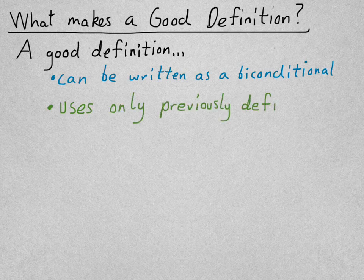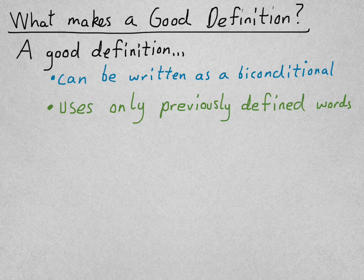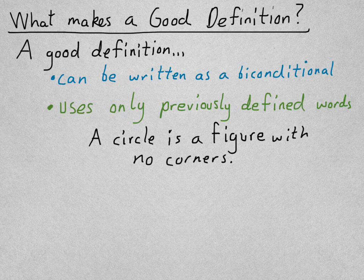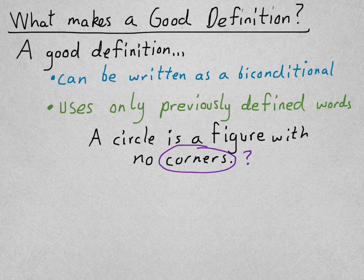Also, a good definition uses only previously defined words. Like, take this non-example. A circle is a figure with no corners. Well, this has several problems with it. First, corners is not very well defined. It's not like we have a good geometry definition of a corner established. So, it doesn't make a good definition if you can't build it off of other definitions.